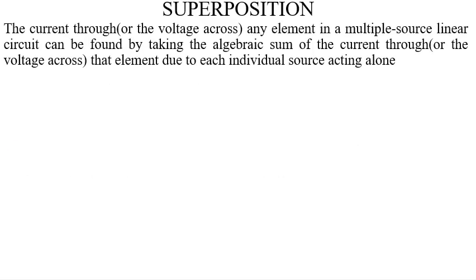So when we say Superposition Theorem, what do we mean? With Superposition Theorem, it simply states that the current through or voltage across any element in a multiple source circuit can be found by taking the algebraic sum of the current through or the voltage across that element due to each individual source acting alone.